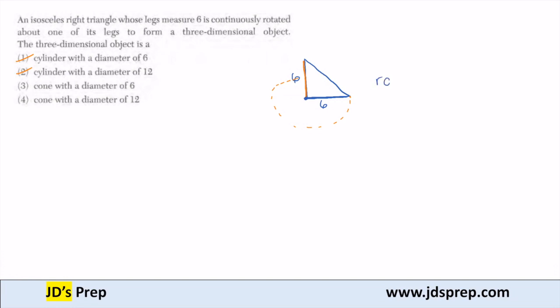So my radius is 6, and because the diameter is twice the radius, then I know the diameter is going to be 2 times 6, which is 12. So this is going to give me a cone with a diameter of 12.